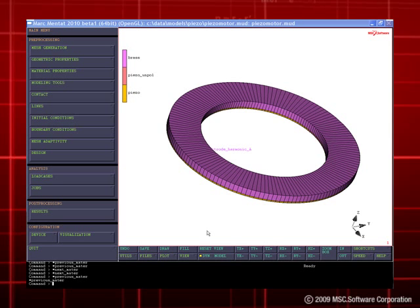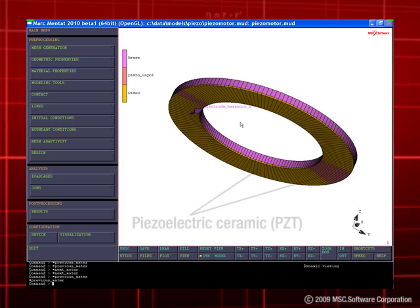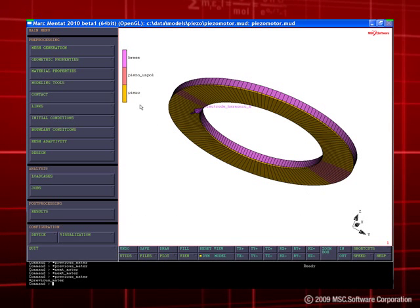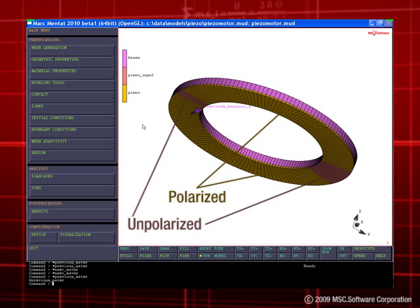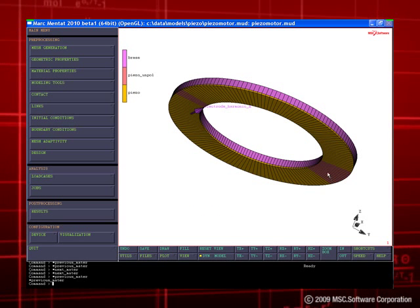In this example, the stator we model consists of a brass ring plate with a piezoelectric ceramic attached to the lower surface. The ceramic is polarized in the thickness direction and the polarity is reversed at an interval of half the wavelength of a standing wave.